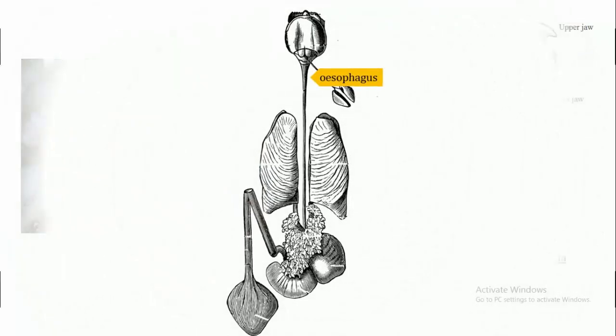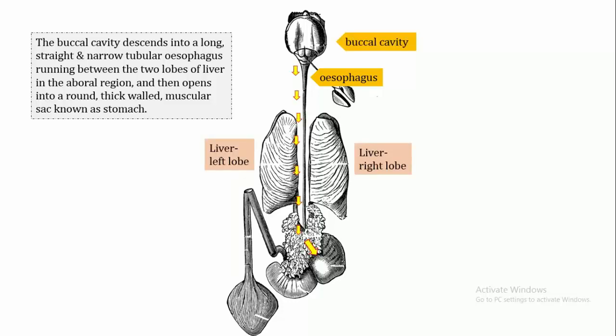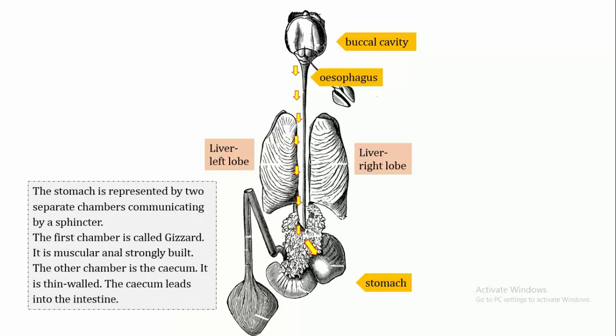The buccal cavity descends into a long, straight and narrow tubular oesophagus, running between the two lobes of liver in the aboral region, and then opens into a round, thin walled muscular sac known as the stomach. The stomach is represented by two separate chambers communicating by a sphincter.